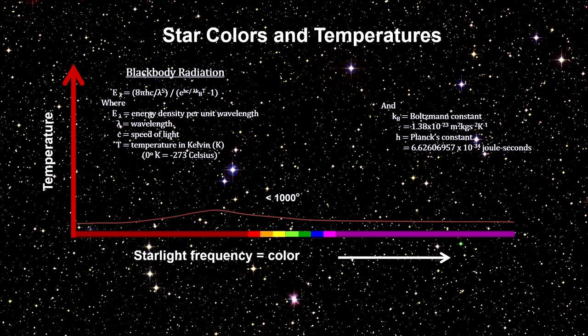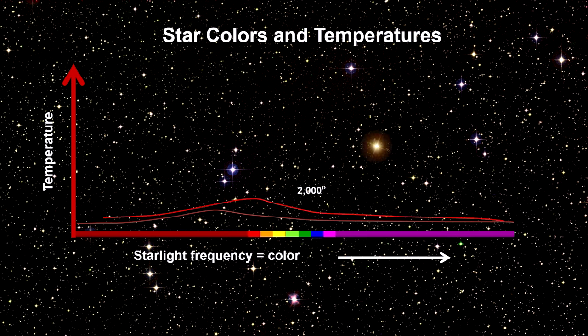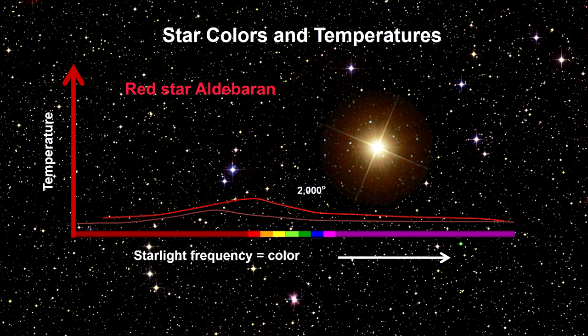As the heating starts, the radiation is all in the infrared range, so we can't see it. As the temperature approaches 2,000 degrees Celsius, we begin to see red. We've seen the red star Aldebaran. It's a good example of this.